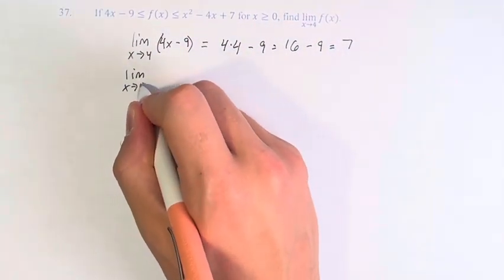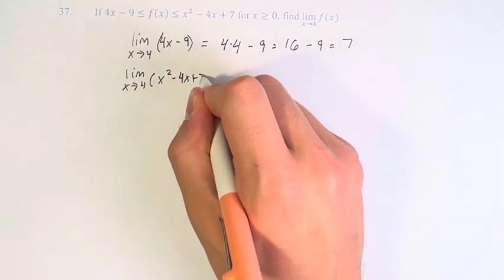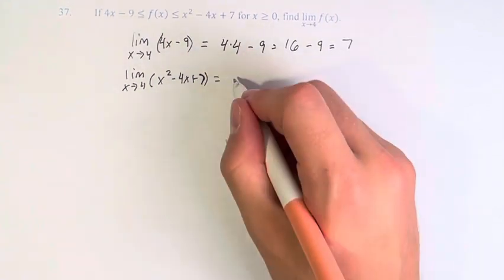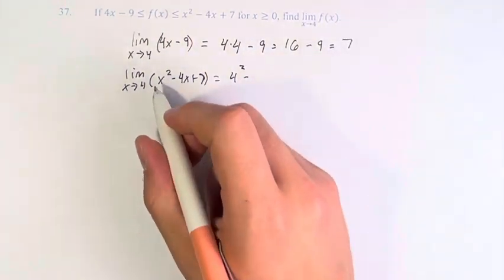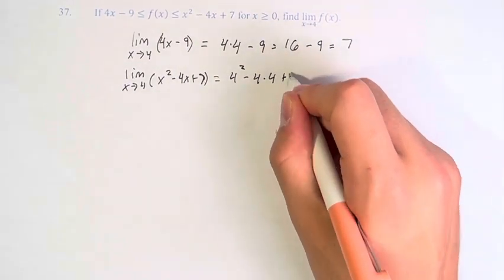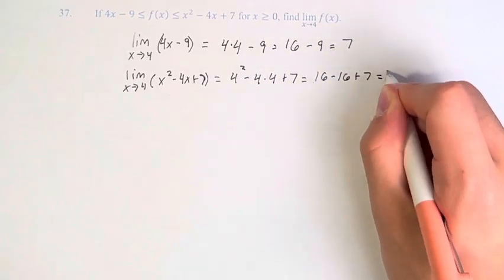We also have to find the limit as x approaches 4 of x squared minus 4x plus 7. Again we can just plug in x to be 4 directly, so we have 4 squared minus 4 times 4 plus 7. This is 16 minus 16 plus 7 which is 7.